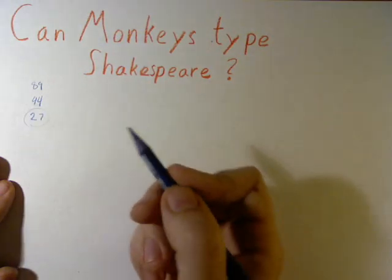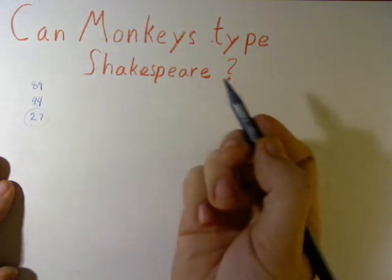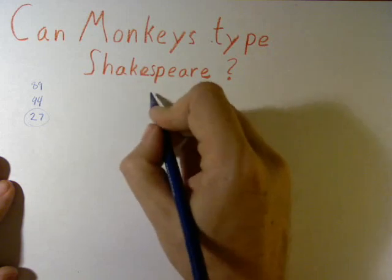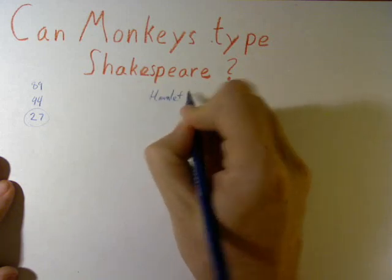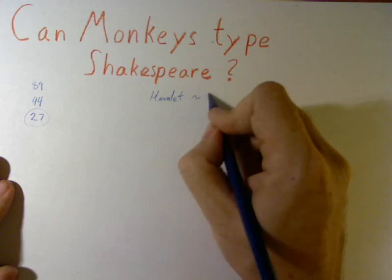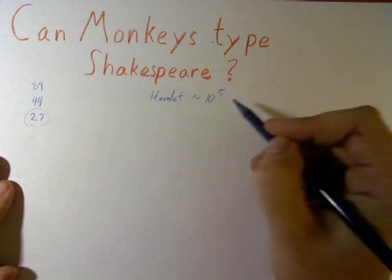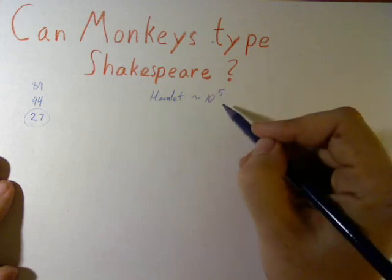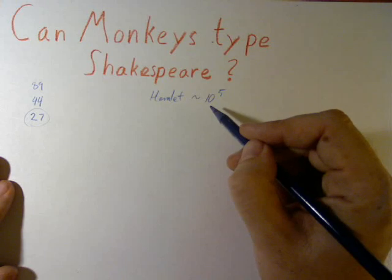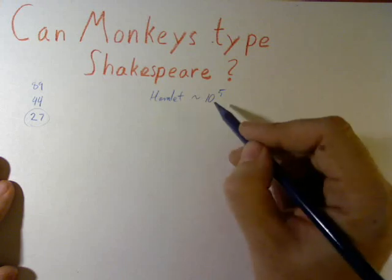Okay, the probability. Shakespeare, Hamlet. Let's take Hamlet. Hamlet has about 10 to the 5th characters in it. I mean, letters, spaces, and so on.